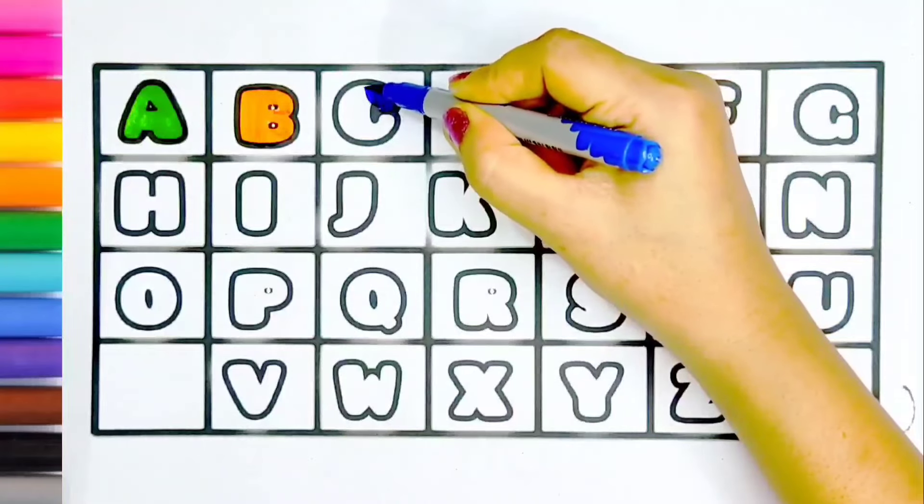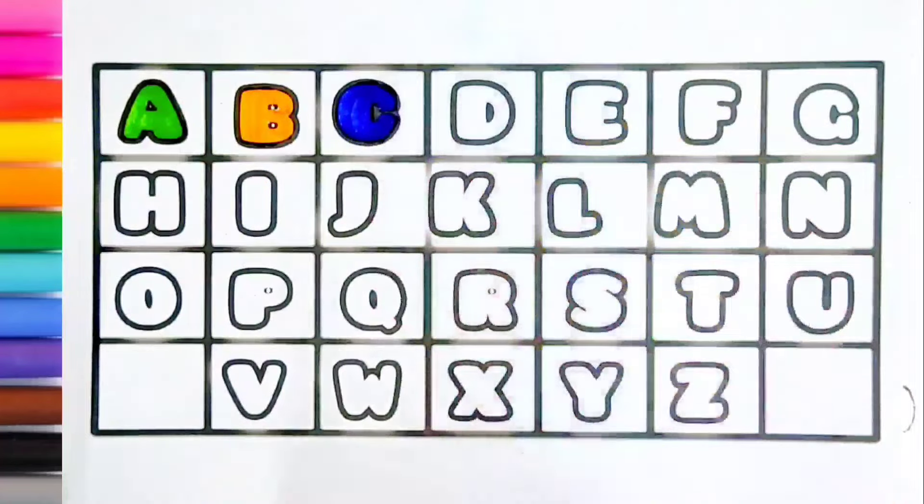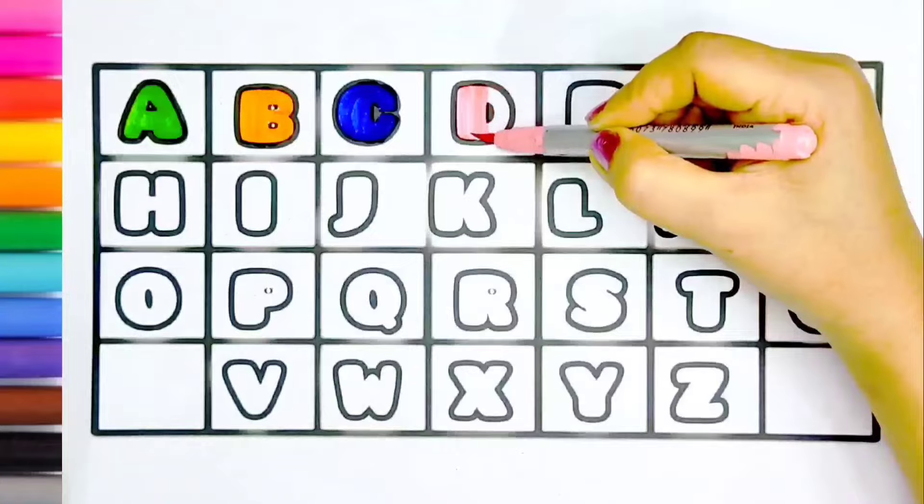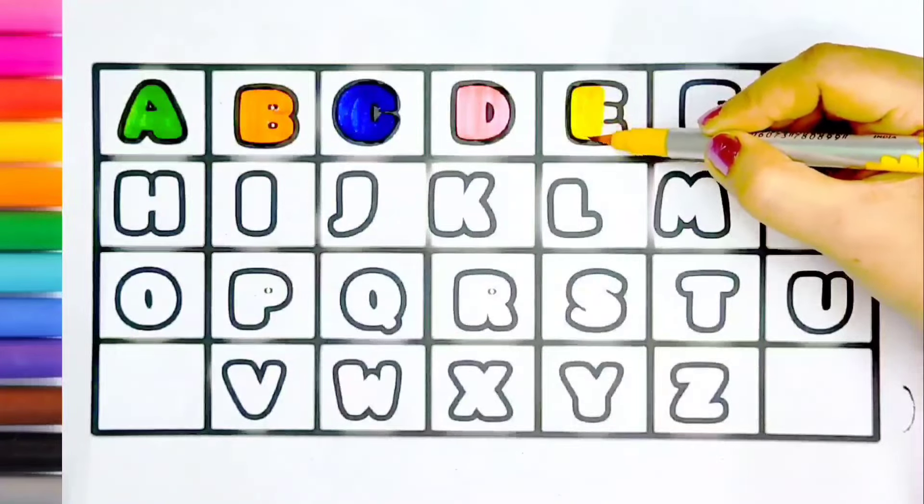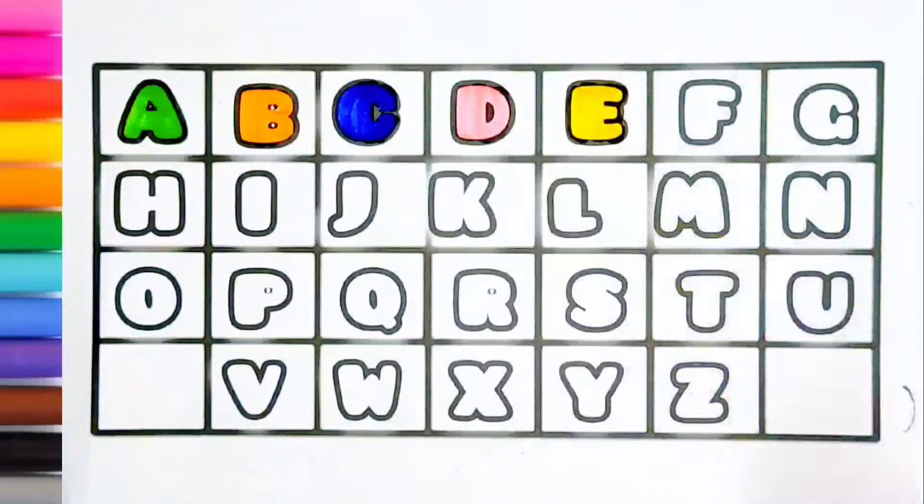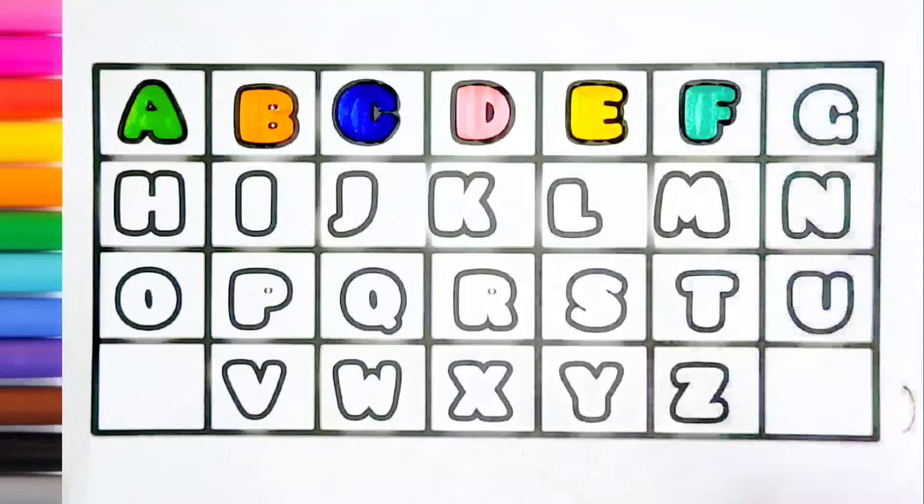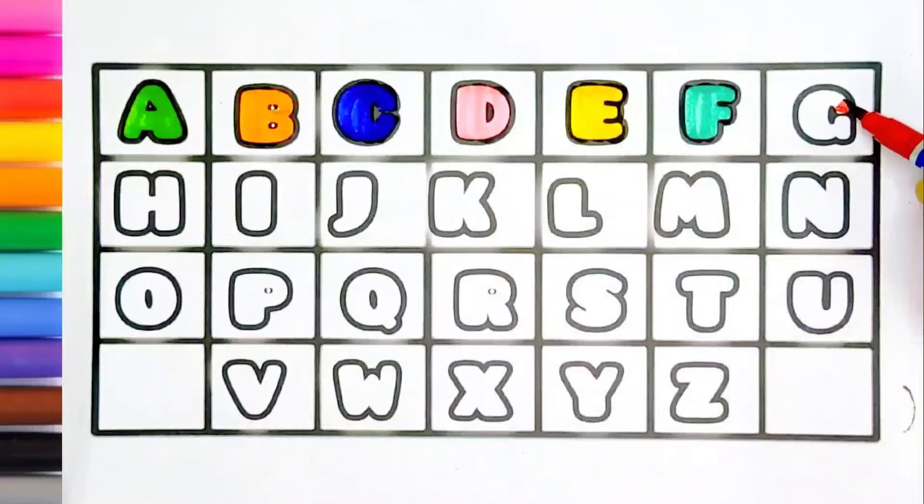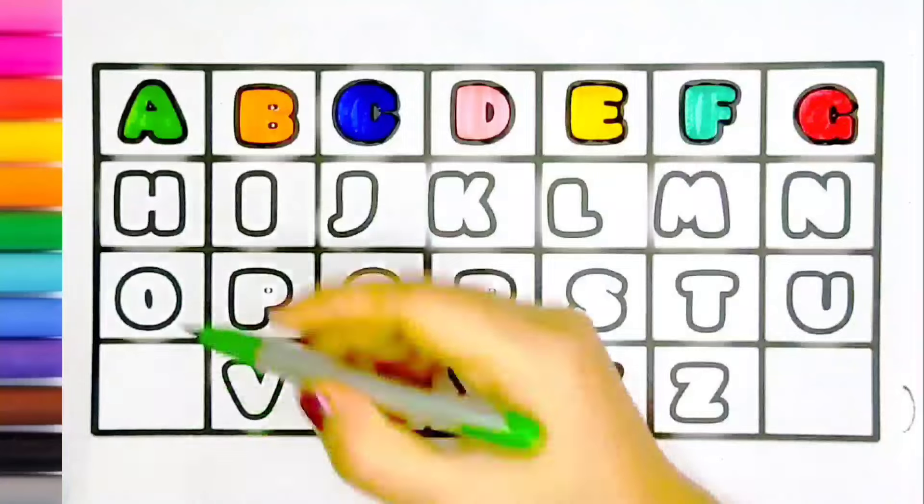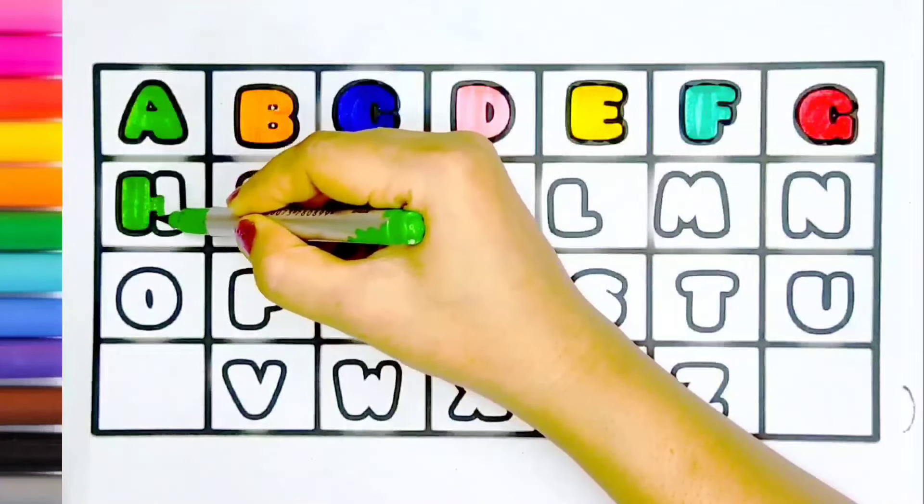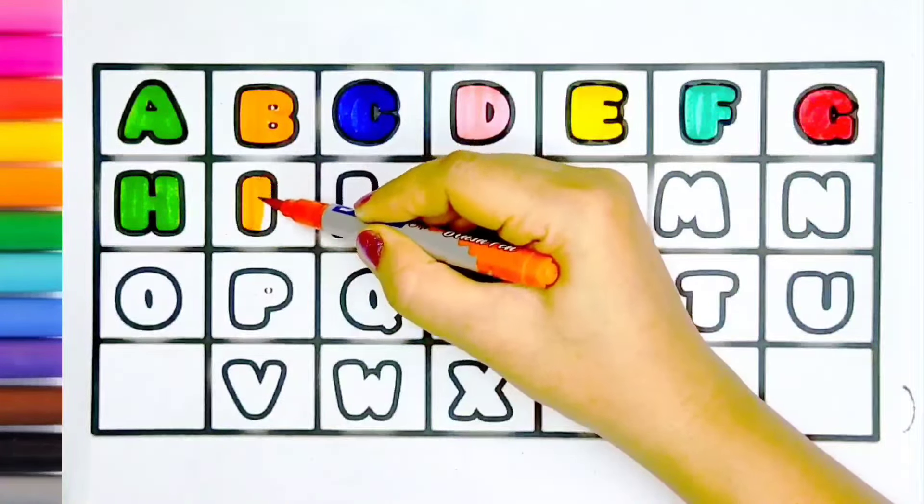C, C for cat. Pink color, D, D for doll. Yellow color, E, E for egg. The green color, F, F for frog. Red color, G, G for grapes. Light green color, H, H for hand. Orange color, I, I for ice.